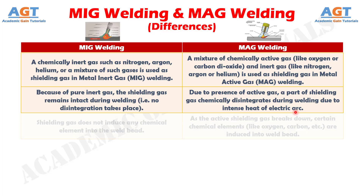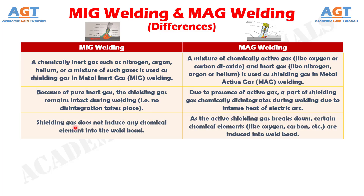Number three: in MIG welding, the shielding gas does not induce any chemical element into the weld bead. Whereas, in MAG welding, as the active shielding gas breaks down, certain chemical elements like oxygen and carbon are induced into the weld bead.